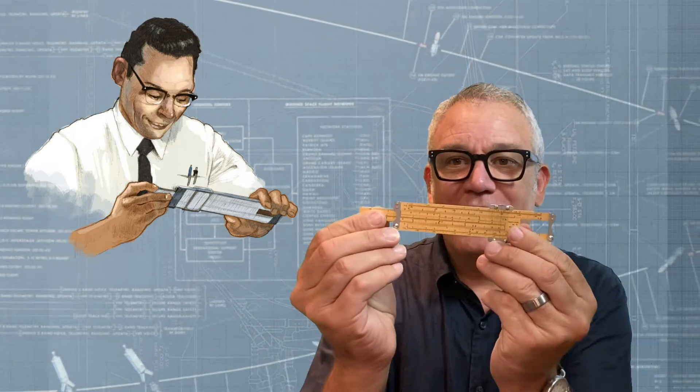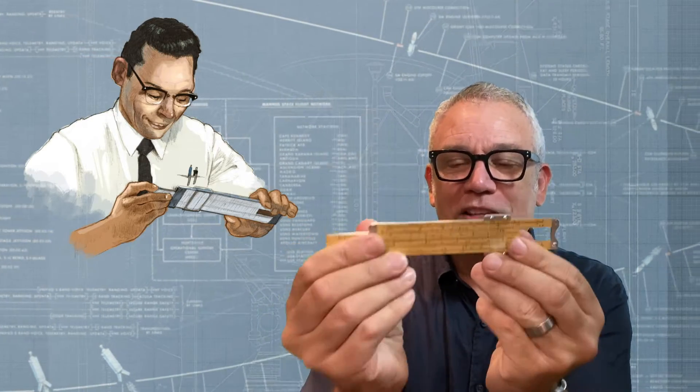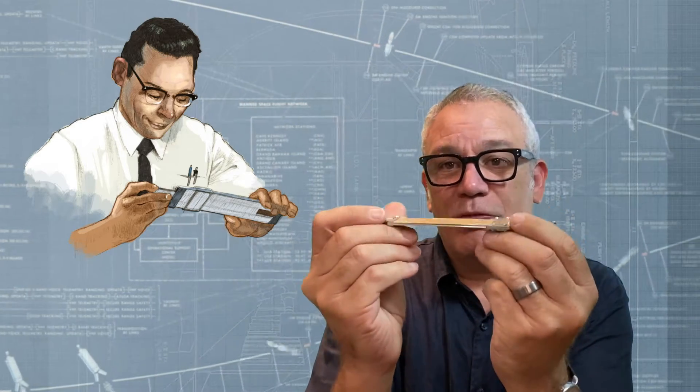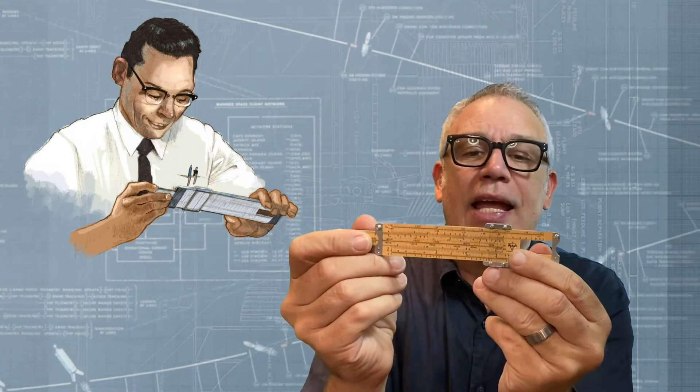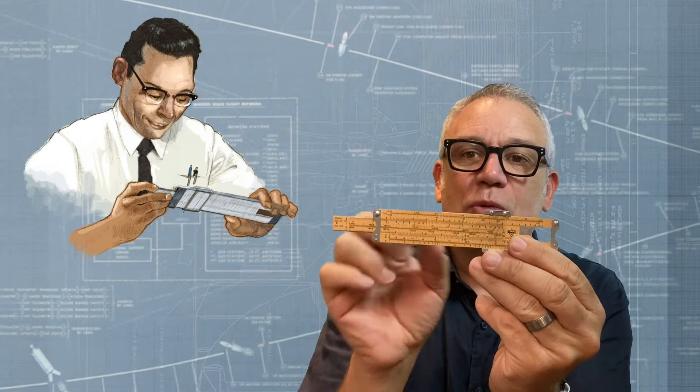The engineers had to use a special tool to do their mathematics and it was a slide rule. Now this slide rule is basically made out of wood or plastic and it has three strips of wood where the center strip can slide back and forth.